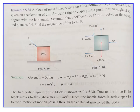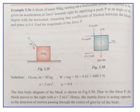Problem 1: A block of mass 50 kg resting on a horizontal plane is to be given an acceleration of 2 m/s² towards the right by applying a push P at an angle of 45° with the horizontal. The coefficient of friction between the block and plane is 0.4. Find the magnitude of force P.